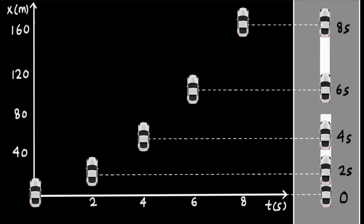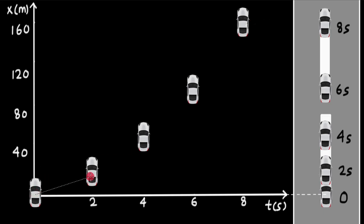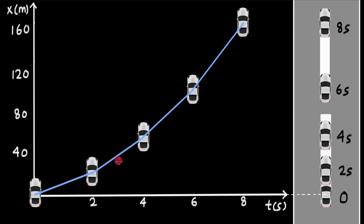Now if we join the different positions of the car at the different time instants, we don't really see one constant straight line. We see different straight lines, but their slopes are increasing. This is a straight line with some slope, and this next one has a greater slope — we see the lines getting steeper and steeper.